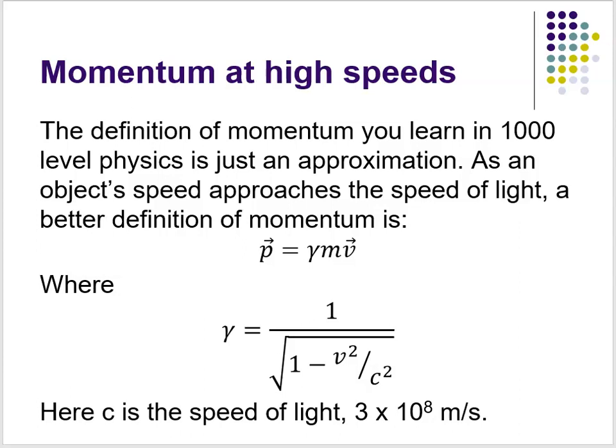The definition you learned in 1000-level physics, p = mv, is just an approximation. As you go further in physics, you learn that the true equation for momentum, including considerations of special relativity — which you'll see in modern physics — is that as an object's speed approaches the speed of light, a better definition of momentum is p = γmv. The gamma, or Lorentz factor, is defined as 1 divided by the square root of 1 minus v²/c², where v is the speed of the object and c is the speed of light, equal to 3 × 10⁸ m/s.